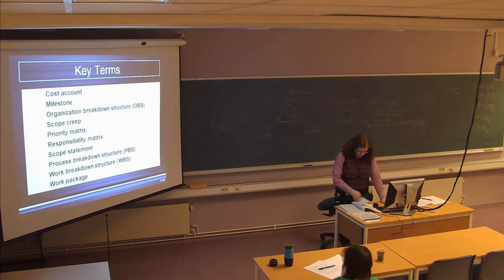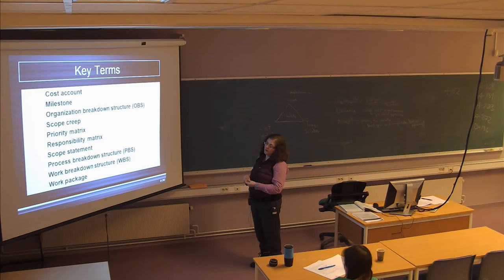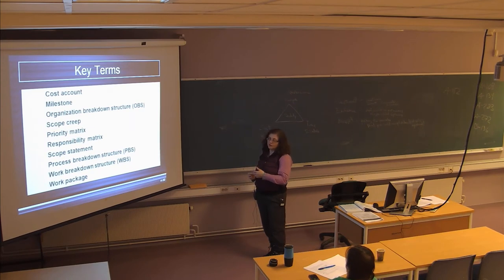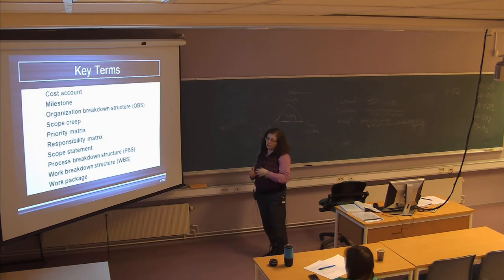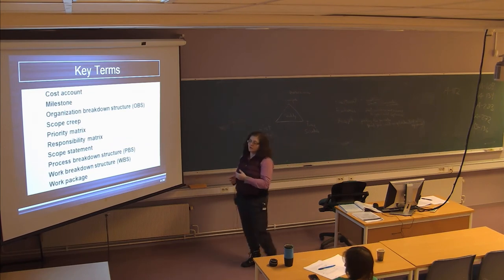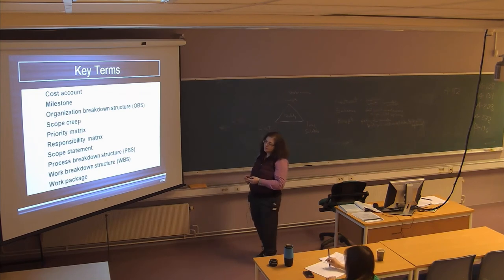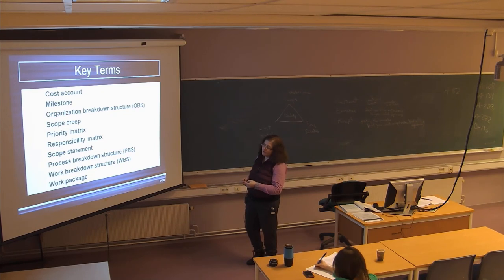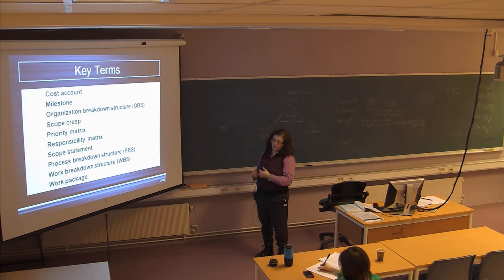Okay, so that's it. The main terms in this chapter are cost accounts, which are associated with the work packages. Milestones are ways of measuring your progress on your deliverables as you proceed through the project. The organization breakdown structure is how the different resources or people in the organization are working on the different activities in the work breakdown structure. Scope creep is when you are changing the requirements of the project beyond the original scope definition. The project priority matrix is how you choose what kind of changes to the original scope you can accept to the scope definition.